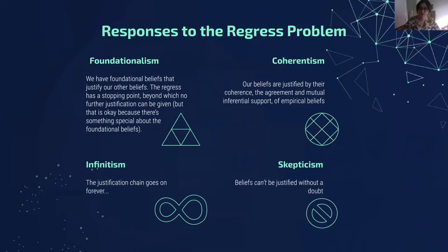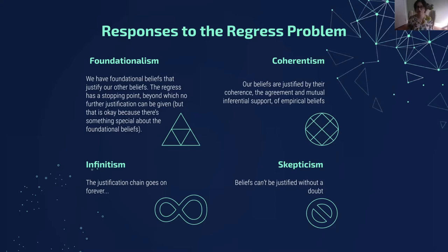So what are some responses to the regress problem? Here are four of them, each with their own symbol for easy recognition. One response is foundationalism. Foundationalism says that we have foundational beliefs that justify our other beliefs. At some point the regress stops because we get to a foundational belief — like a cornerstone of our building. You're not going to go further into the ground. It holds everything else up and we can stop there. The regress has a stopping point, and according to the foundationalist, that's okay because there's something special about those foundational beliefs.